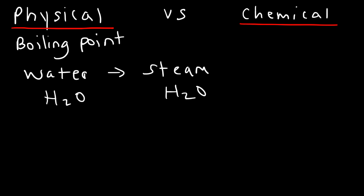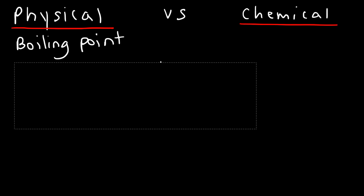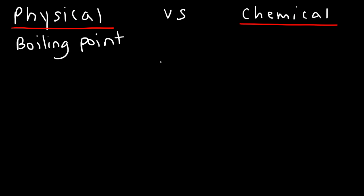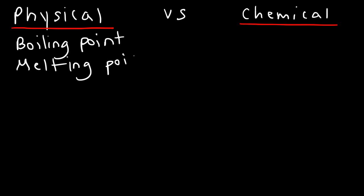Because the boiling process is associated with a physical change, boiling point — which is a characteristic of water — must be a physical property of water. So, physical properties and physical changes are associated with each other. A property is simply a characteristic of a substance. So, boiling point, melting point, freezing point — these are all physical properties.